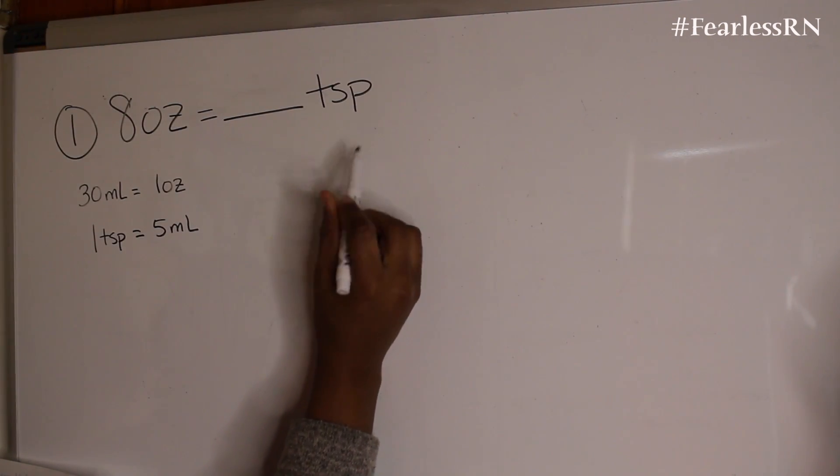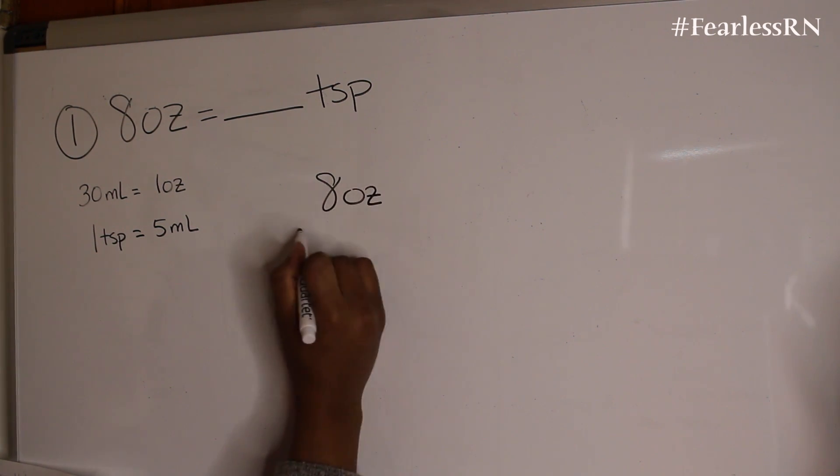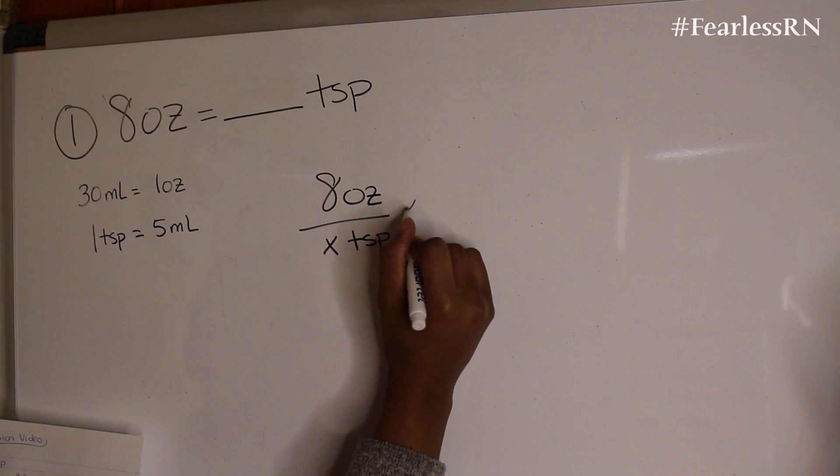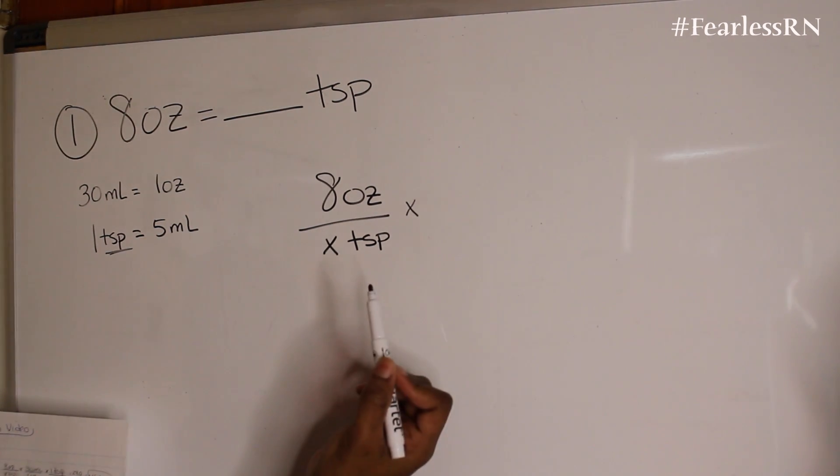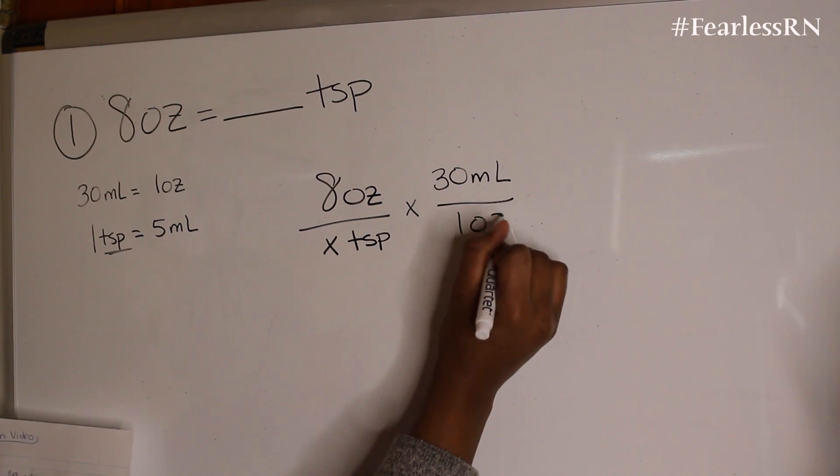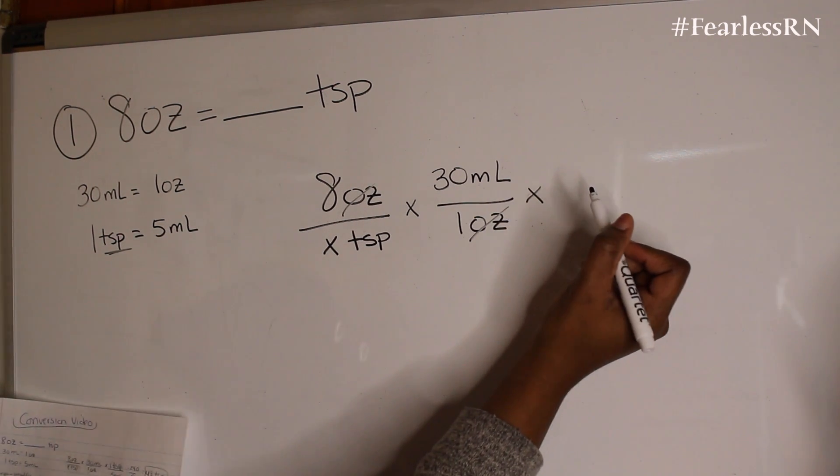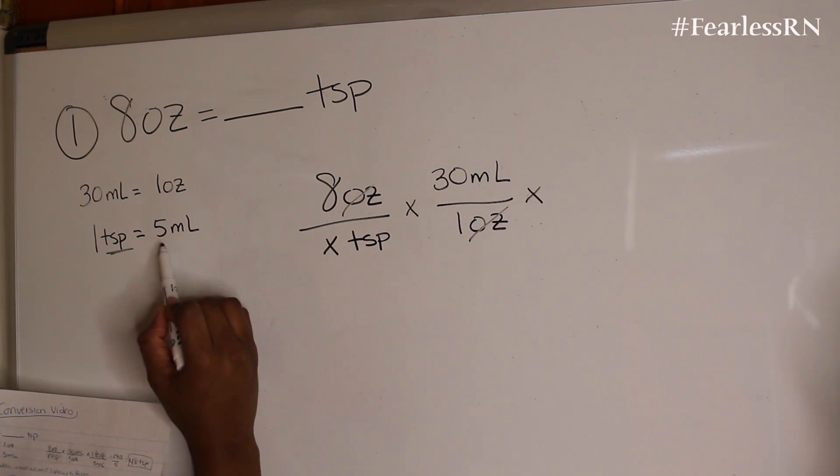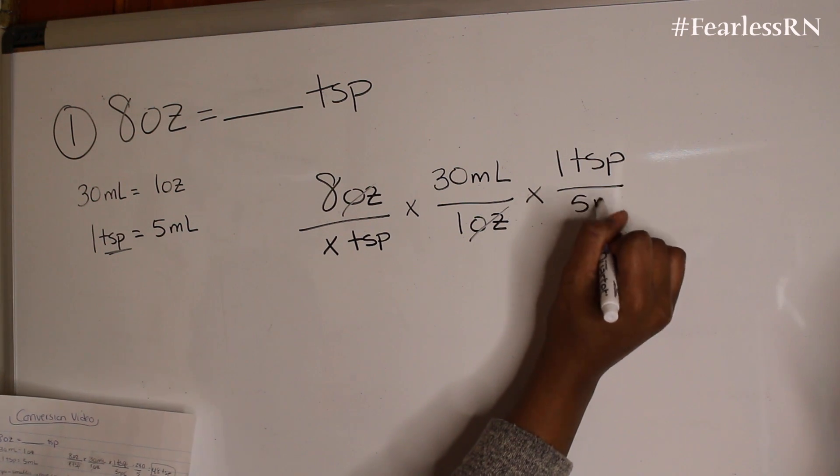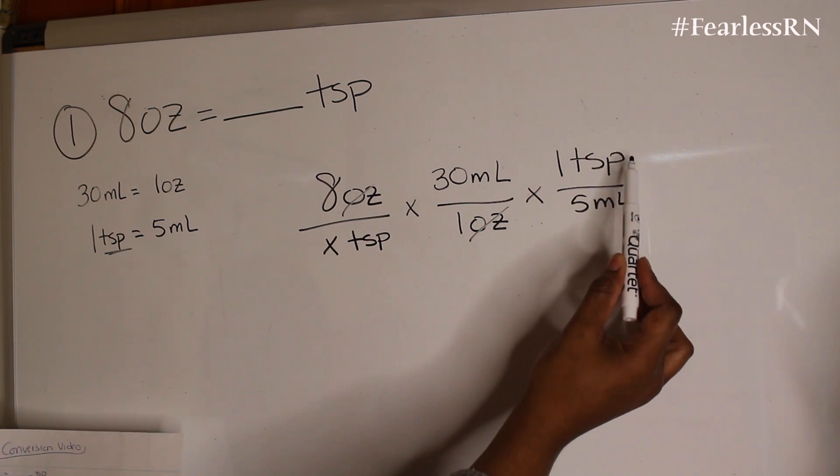Now we're gonna solve the problem. So what I like to do is put these two like this. So it's going to be 8 ounces over x tablespoons. We're going to put the conversion because we're trying to get to tablespoons, so I'm going to put 30 mls over 1 ounce. So then this is crossed out, and we're going to put the other conversion, which is one tablespoon equals five milliliters.